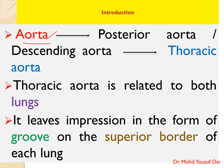The ascending aorta goes upwards and backwards, forming an arc known as the aortic arc. The aorta then continues as the descending aorta. When the descending aorta crosses the seventh or eighth thoracic vertebra, it continues as the thoracic aorta, which passes through the hiatus aorticus and enters the abdominal cavity, continuing as the abdominal aorta.